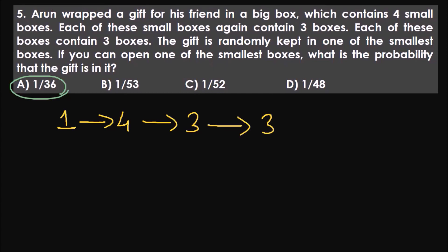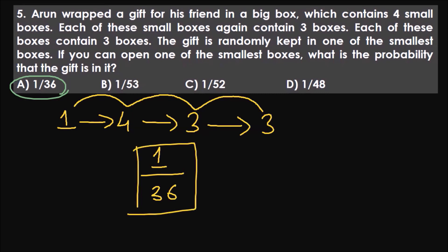The gift is randomly kept in one of the smallest boxes. If you open one of these smallest boxes, what is the probability the gift is in it? The favorable outcome is one box. The total number of smallest boxes is 1 × 4 × 3 × 3, which equals 36. So the probability is one by 36. The solution really is smaller than the question.